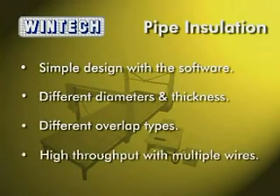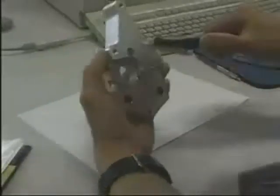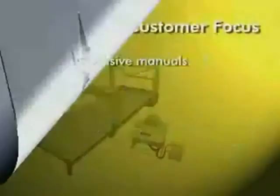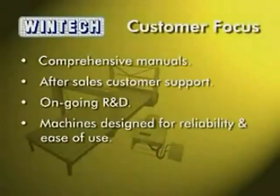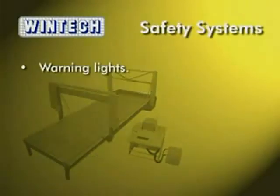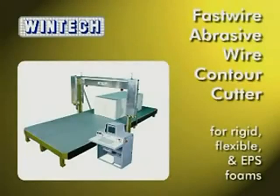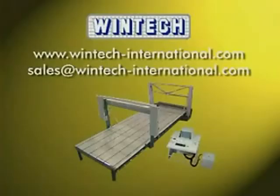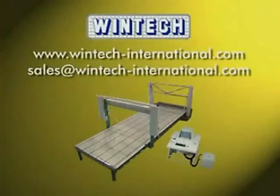Depending upon your needs, the WinTech CompuSet can have 20, 30, or 40 hot wires. Unlike other hot wire machines, the wires do not require loading and removal before and after each job, but are stored ready for immediate use, saving time. The CompuSet's cutting frame can be used either as an integral part of the CompuLine production line or independently.